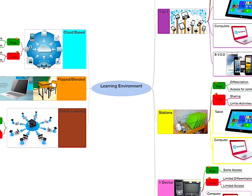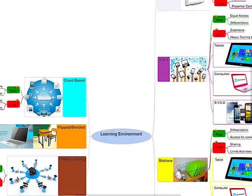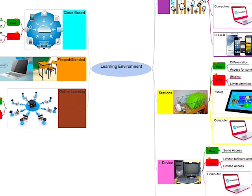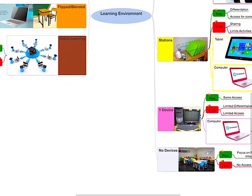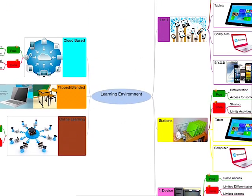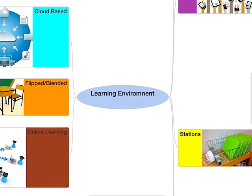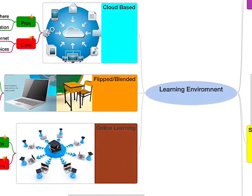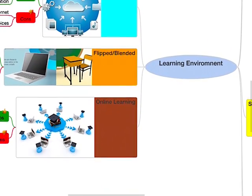We are talking about the learning environment. We have two sides to our learning environment. Number one, we have some of the types of technology available in the classroom — for example, we have our smart board, our one-to-one, some stations that could be a station in a classroom or like a computer lab, a single device in a classroom, or no devices. On the other side, we are going to take a look at some different types of learning with technology: cloud-based, flipped or the blended model, and online learning.